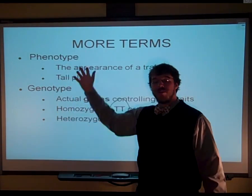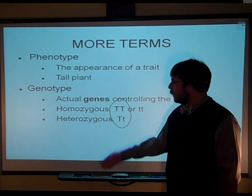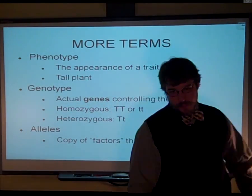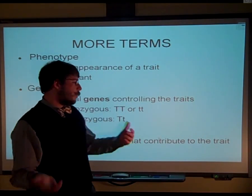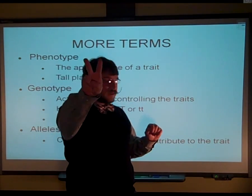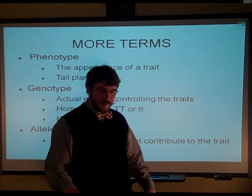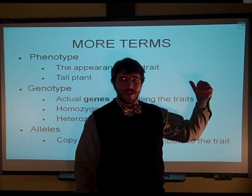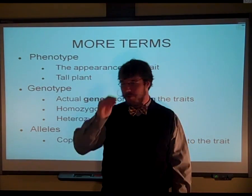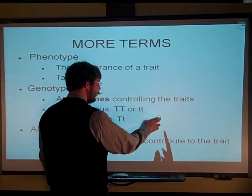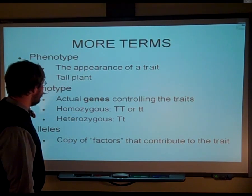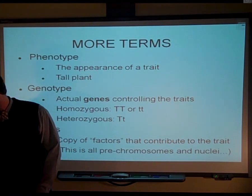They have the same phenotype, the same physical appearance. So alleles are the copies of those factors. Mendel determined that for those autosomal pea plant traits, the traits always have two copies — which makes sense because you get one set of chromosomes from your mother and one from your father. So you have two copies of every gene. We call those copies the alleles. You can have dominant or recessive alleles. Keep in mind, this is all pre-chromosomes, pre-knowing about the nucleus, pre-really knowing about cells.